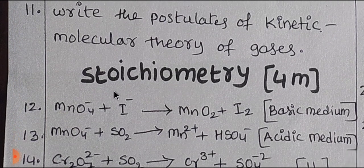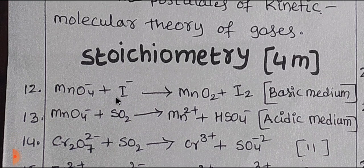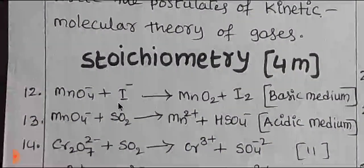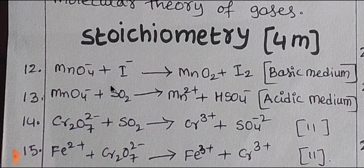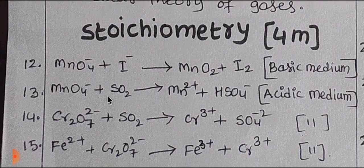The next lesson is Stoichiometry. Stoichiometry will need four marks. The key topic is balancing equations in basic medium and acidic medium. First, you balance in basic medium and the remaining 3 questions are in acidic medium.